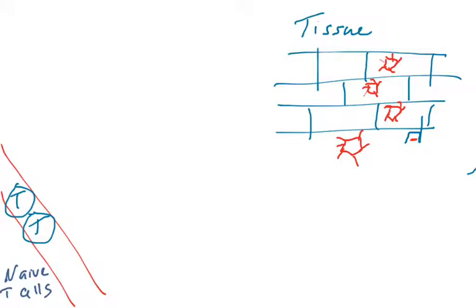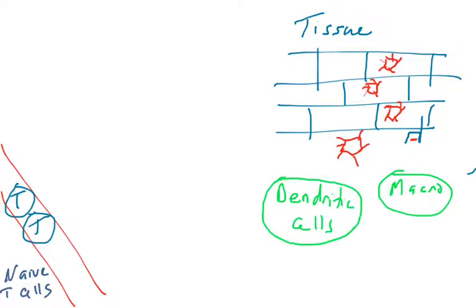So here's a virally infected tissue, for example. Now, we want the T cells to come and clear this, but before that happens, the T cells need to activate, and that's going to happen in the lymph nodes. So in tissues, you have to remember that there are phagocytic cells called macrophages and dendritic cells. They are both phagocytes. You find them both in tissues.